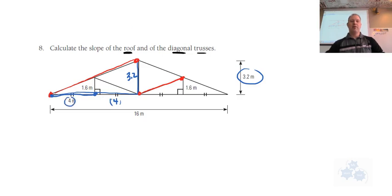So we've got a bottom of 4 plus 4. So we've got a rise of 3.2 and then a run of 4 plus 4. So this is for the roof.